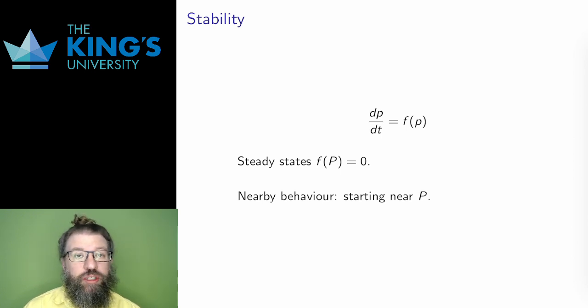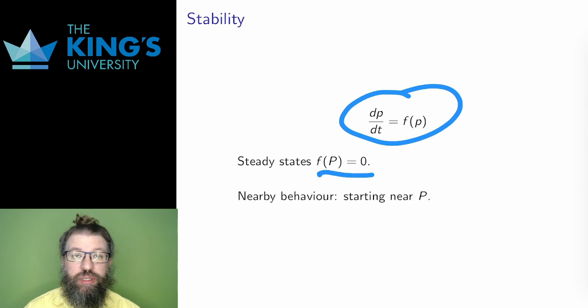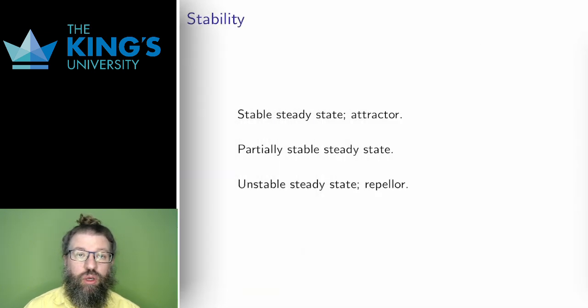So we're going to be talking about an autonomous equation with a steady state at capital P. And it turns out that not all steady states are created equal. When the system is exactly at a steady state, nothing changes. That's what steady means. But I can also ask what happens near a steady state. What does the system do if it starts a little bit above or below capital P? Well, three things can happen.